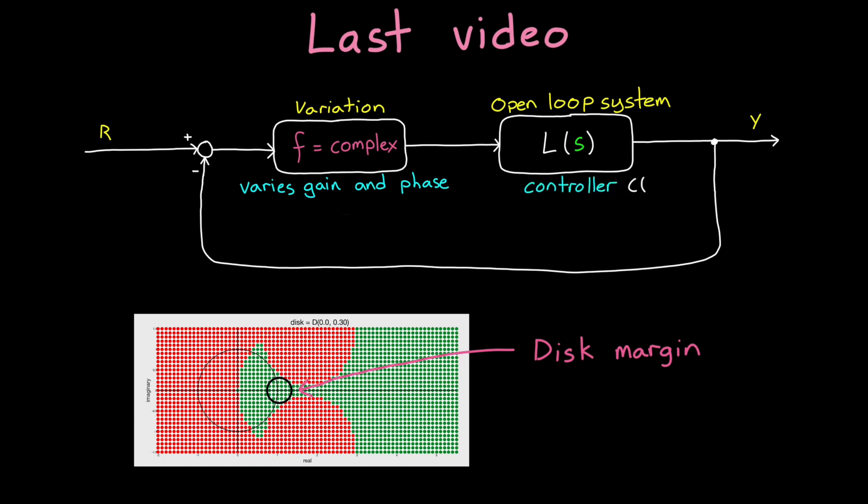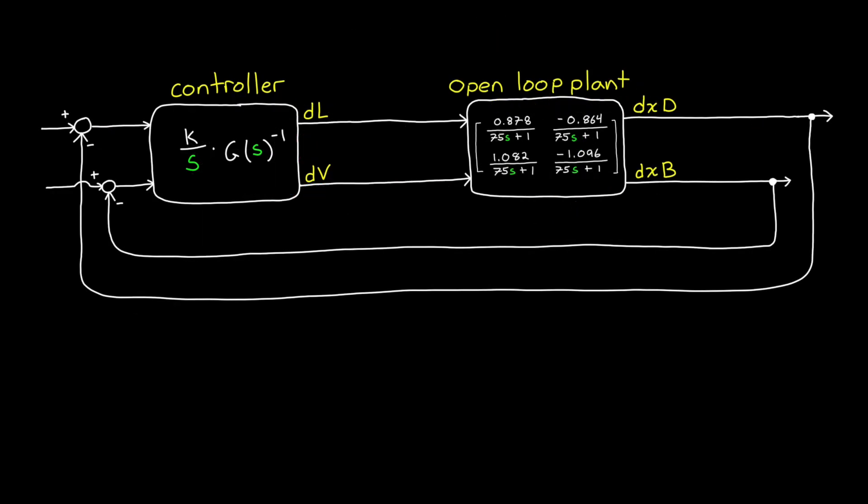Now, there the open-loop system included both the controller and the plant. However, for this system, the controller and the plant are separate, which means we have the ability to assess variations in two different places. The first is that we can vary the outputs of the controller before they go into the plant, which basically means we can vary the plant inputs. And the second is that we can vary the plant outputs before they loop back around to the controller.